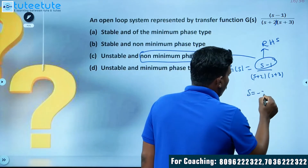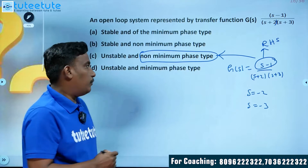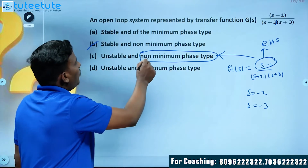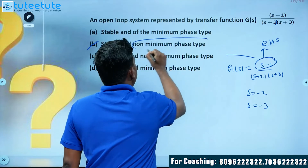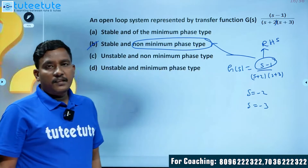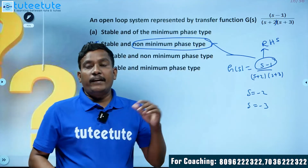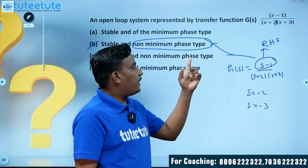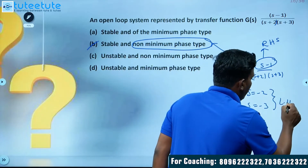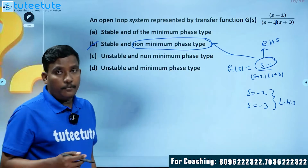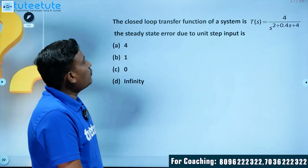Next, observe the stability. The two poles are at s = -2 and s = -3; both lie on the left side of the s-plane, so the system is stable. Therefore, the system is stable and non-minimum phase type. The answer is option B.